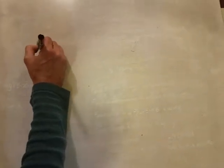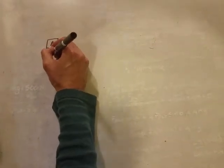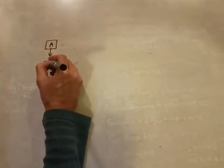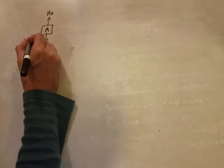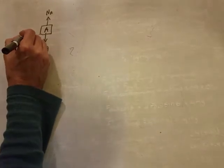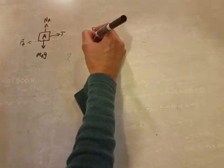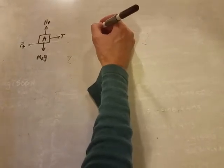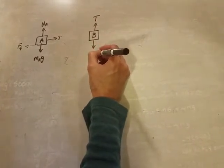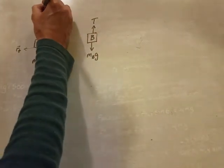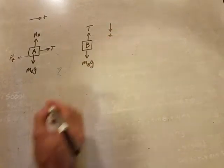All right, we have two blocks, block A and block B. Block A will have MAG, a normal force, friction, and tension. Block B has a tension and MBG. Our block is going to accelerate this way, so I'm going to make that way positive, and it's also going to accelerate down, so I'm going to make down positive.